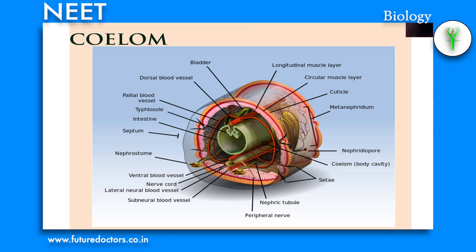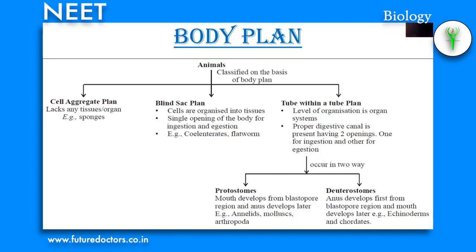Further examples of coelomates include hemichordates and chordates. In some animals, the body cavity is not lined by mesoderm; instead the mesoderm is present as scattered pouches between the ectoderm and endoderm. Such a body cavity is called pseudocoelom and the animals possessing it are called pseudocoelomates. Example: Aschelminthes. Animals in which the body cavity is absent are called acoelomates. Example: Platyhelminthes.